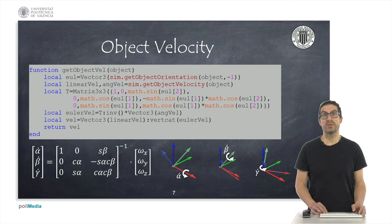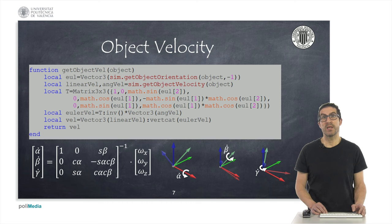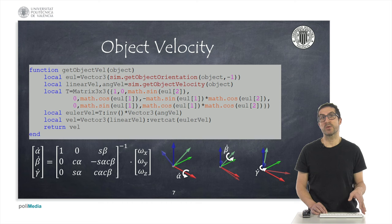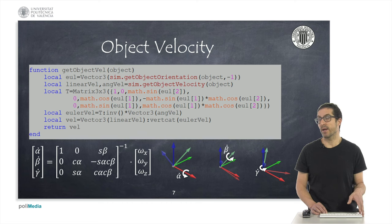Specifically, the angular velocity is defined with respect to the rotation axis of the object, and by means of a simple transformation we can obtain the velocity of the Euler angles. The code combines into a vector of six elements — three corresponding to the linear speed and three corresponding to the speed of Euler angles — and this is what it returns.